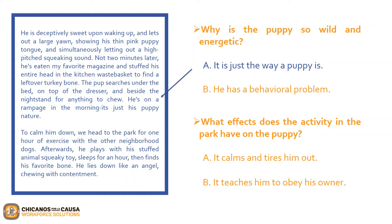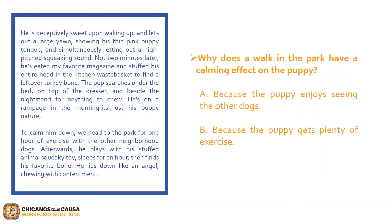Let's look at the next question. What effect does the activity in the park have on the puppy? A, it calms and tires him out; or B, it teaches him to obey his owner? The answer is A — it calms and tires him out. We can see that stated in the top of the second paragraph. Last question: why does a walk in the park have a calming effect on the puppy? A, because the puppy enjoys seeing the other dogs; or B, because the puppy gets plenty of exercise? The answer is B — because the puppy gets plenty of exercise. Found in the same statement of the second paragraph.